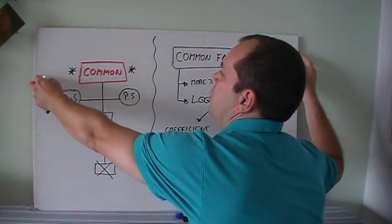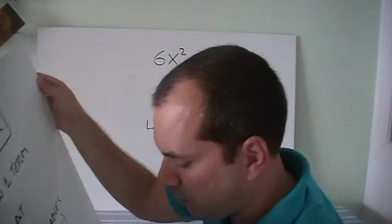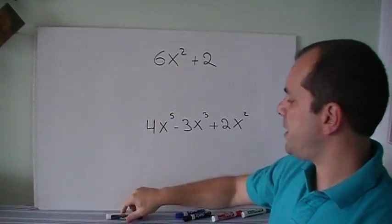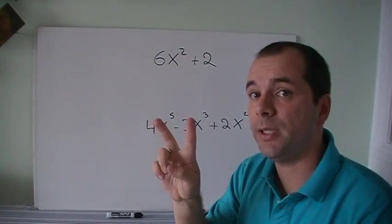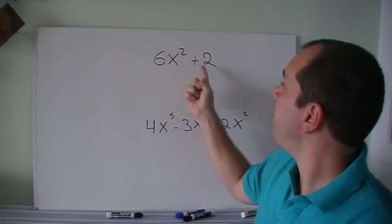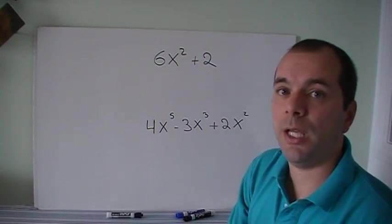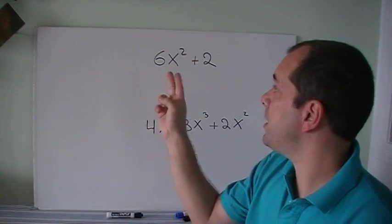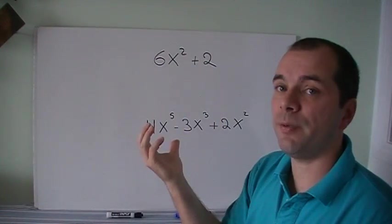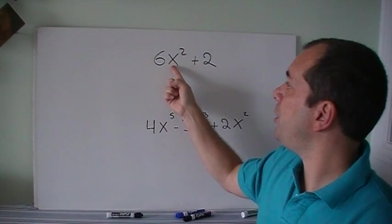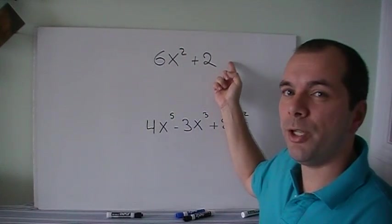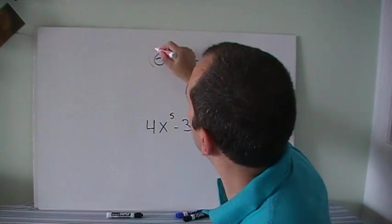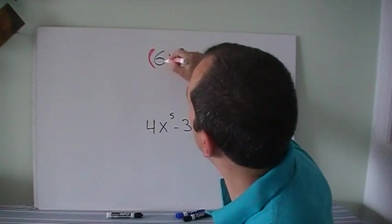6x squared plus 2. So there are two terms. We need to know if a number here goes into 6 and into 2. And you can probably see that that number is going to be 2. 2 goes into 6 and 2 goes into 2. Then we'll look for the variables. We see we have x squared here, but no x squared here. So what we're going to do is we're going to take out a 2 from here.